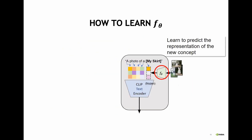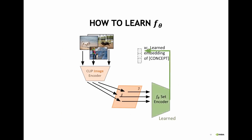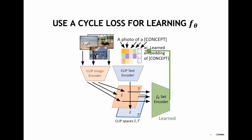How do we learn this function F-theta? We begin by taking a few images of a concept — maybe a well-known concept such as a dog — and embed them using the image encoder. Then we take each of the embeddings to a deep-set network and predict some token. We join this token with a prompt such as 'a photo of a concept' and encode it using the CLIP text encoder. We close the loop with a cyclic loss, aiming for the sentence 'a photo of a concept' to be similar to the input images describing this concept.